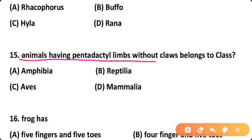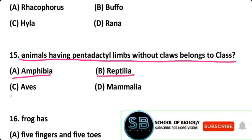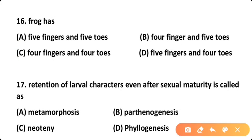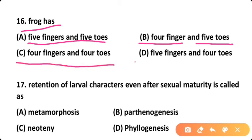Question fifteen: Animals having pentadactyl limbs without claws belong to which class? Option A: Amphibia, Option B: Reptilia, Option C: Aves, Option D: Mammalia. Correct answer is Option A — animals having pentadactyl limbs but no claws belong to Class Amphibia. Question sixteen: Frog has — Option A: five fingers and five toes, Option B: four fingers and five toes, Option C: four fingers and four toes, Option D: five fingers and five toes. Correct answer is Option B — frogs have four fingers and five toes.